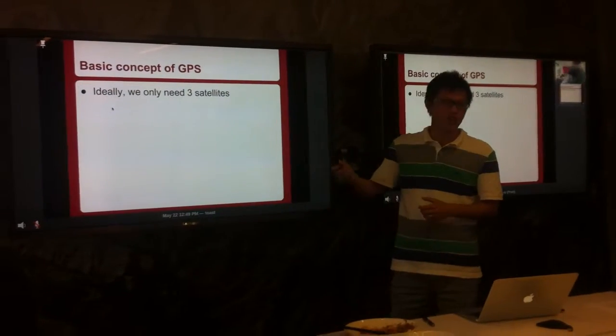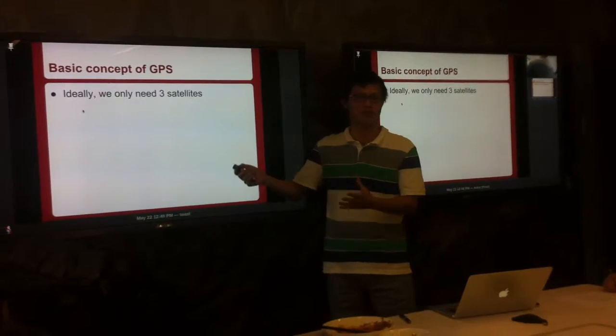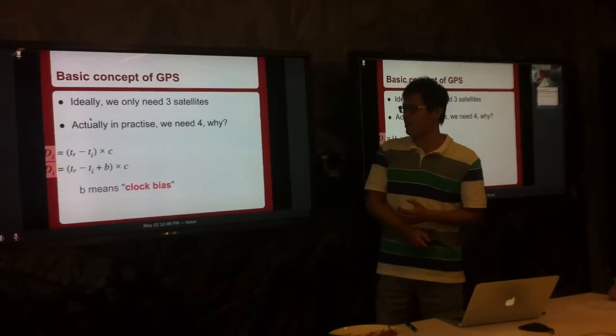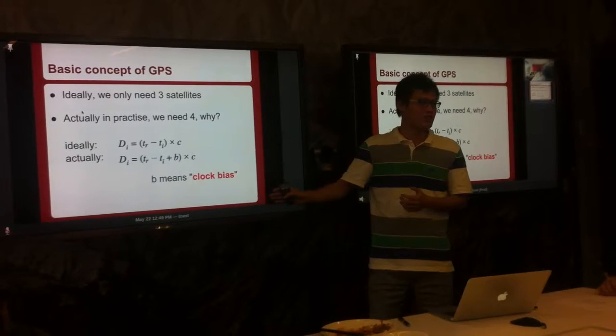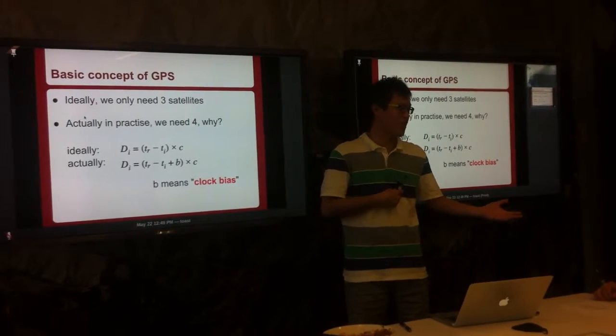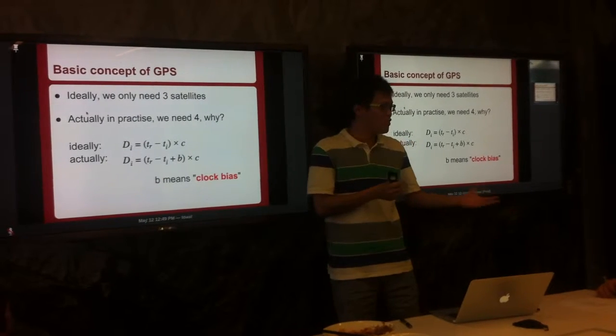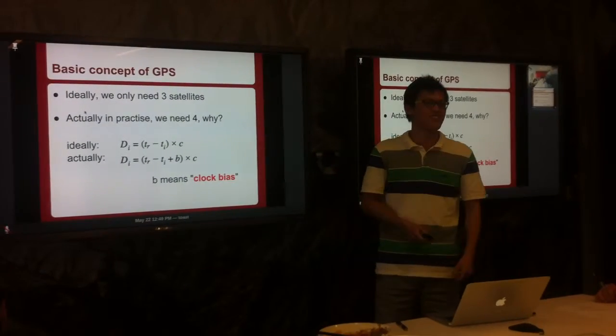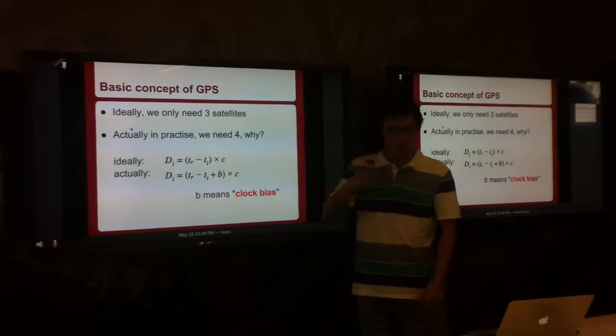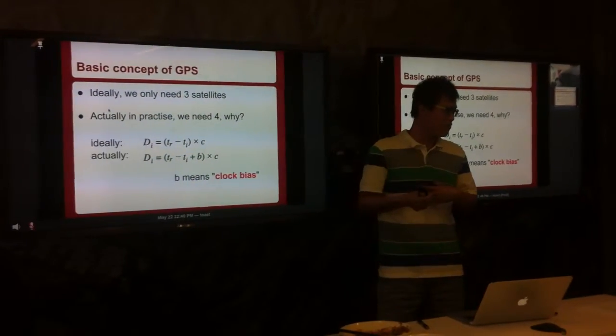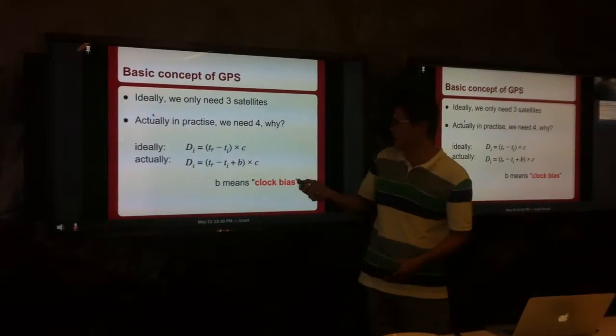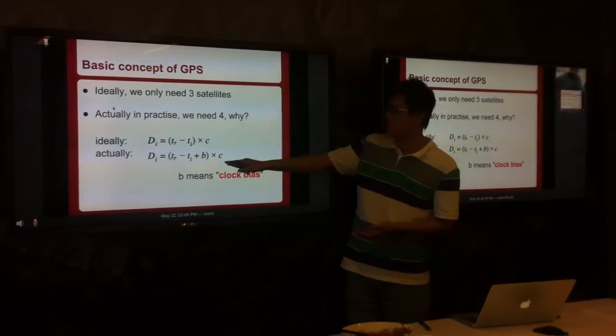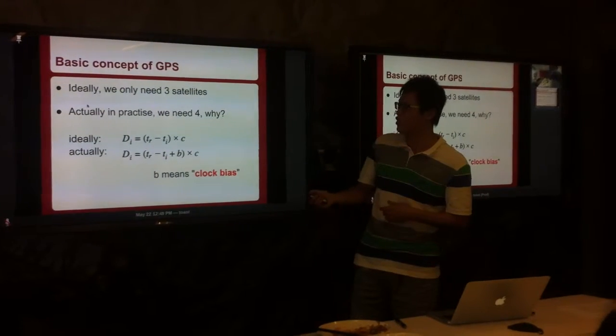But this is the ideal case, that we need three satellites to detect my location. But in practice, actually, we need four satellites. Why? Because as Yifan said, there are clock biases. I said I sent you a message at 8 o'clock, but you found that you received a message at 7:59. How is that going to happen? You received it even before I sent it out. That's the problem, that my clock and your clock might be different. When I'm at 8 o'clock, you might be at 7.